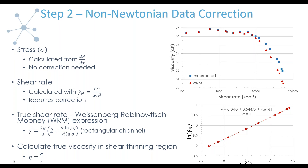Using the definition of viscosity — our stress, which requires no assumptions about the fluid, divided by now our corrected shear rate — gives us in the top plot the red data points, which are corrected with the WRM expression. So now the data is ready to use.